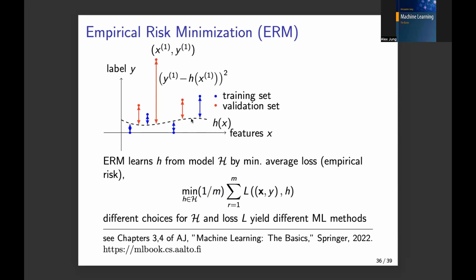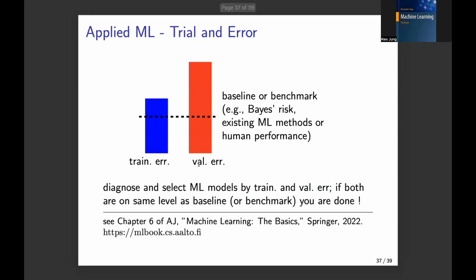You must always validate the trained model. And we validate the trained model by computing the prediction errors or the average loss on a validation set that has not been used in this training problem. So this red data points, they are not used in this training problem. But we use this red dots to compute the validation error. And then you can analyze to a large degree, you can diagnose machine learning methods just by comparing this training error with the validation error.